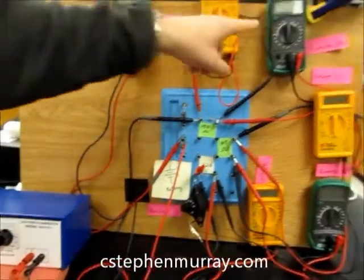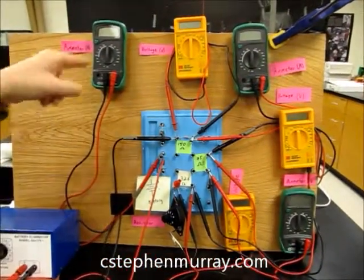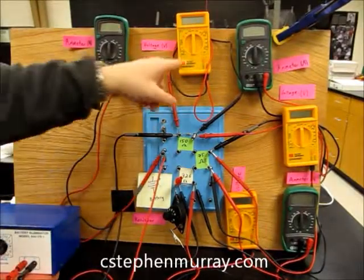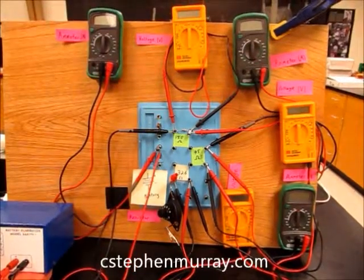We have green ammeters - ammeters are not necessarily green, we've just kept these to be consistent - and the yellow ones we've hooked up as voltmeters.